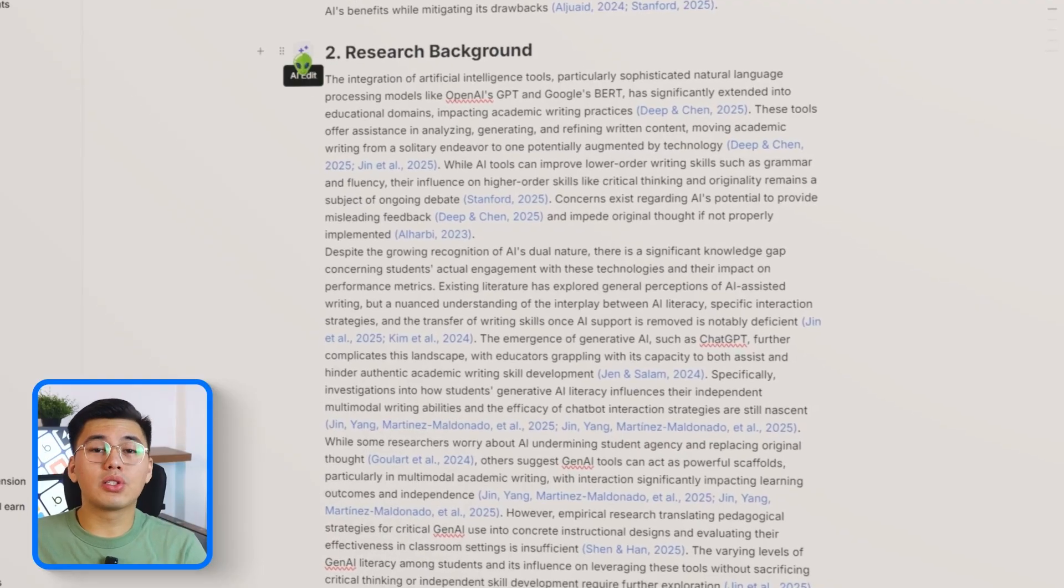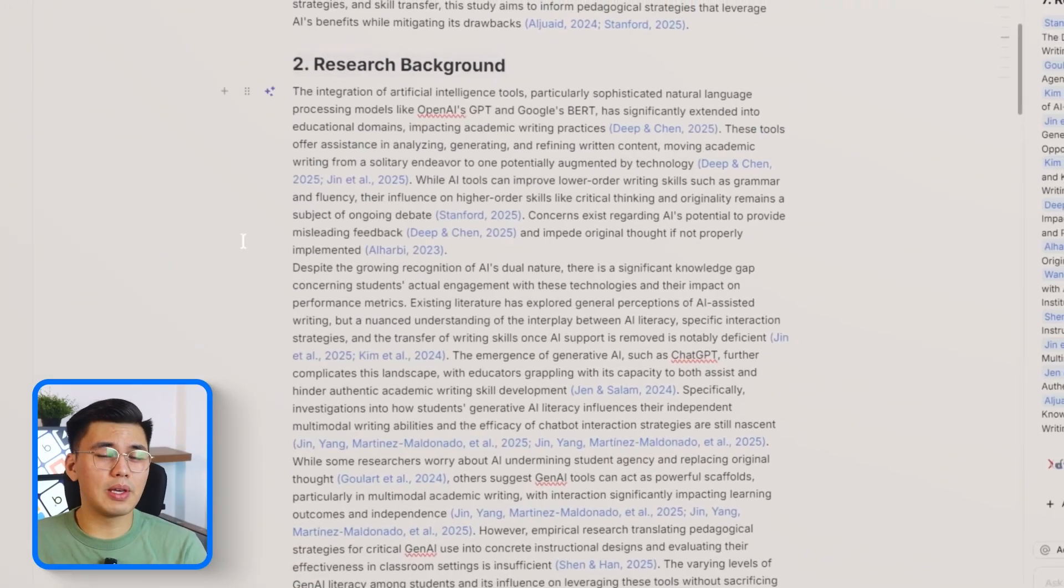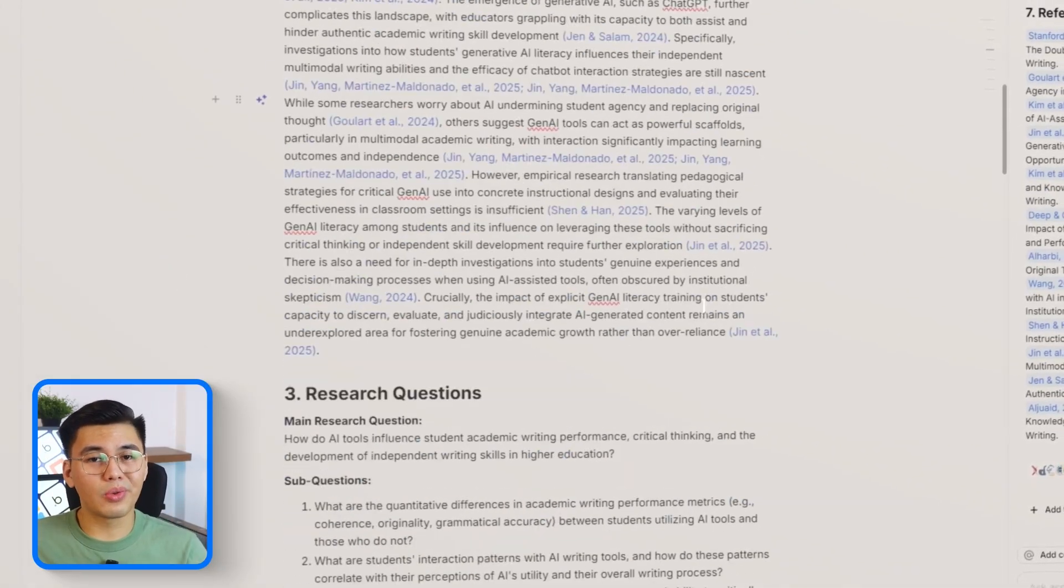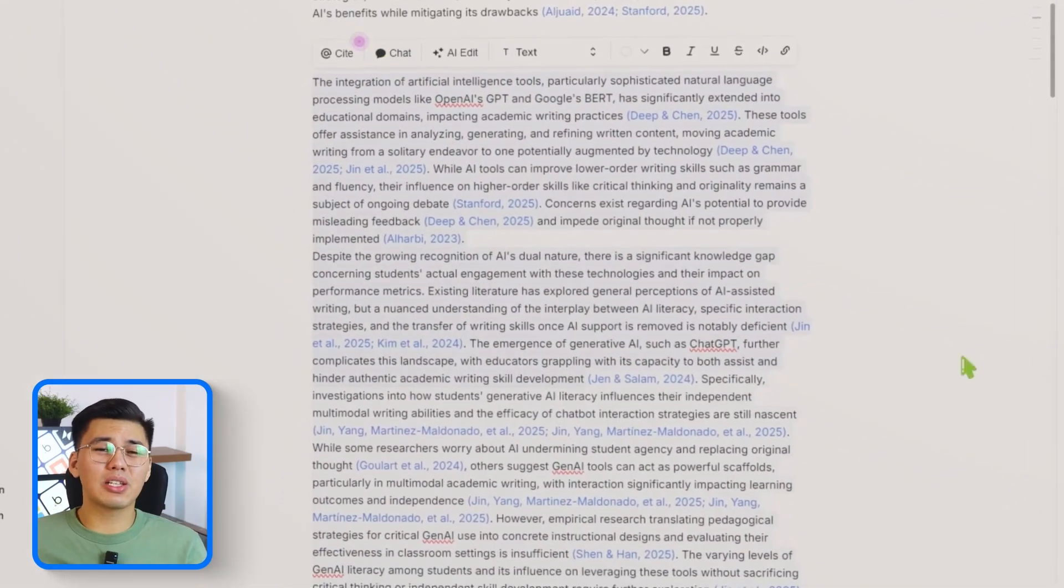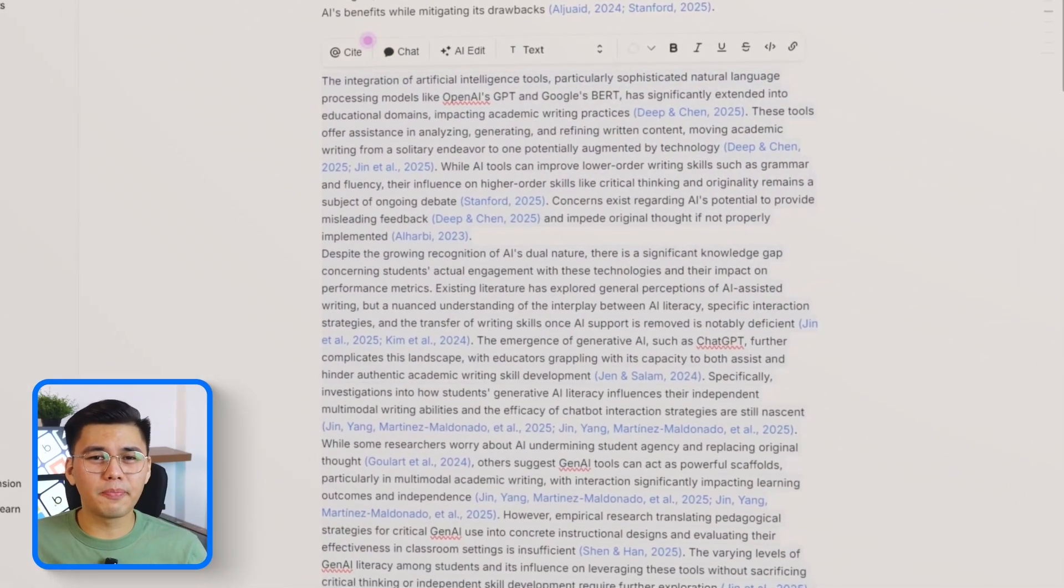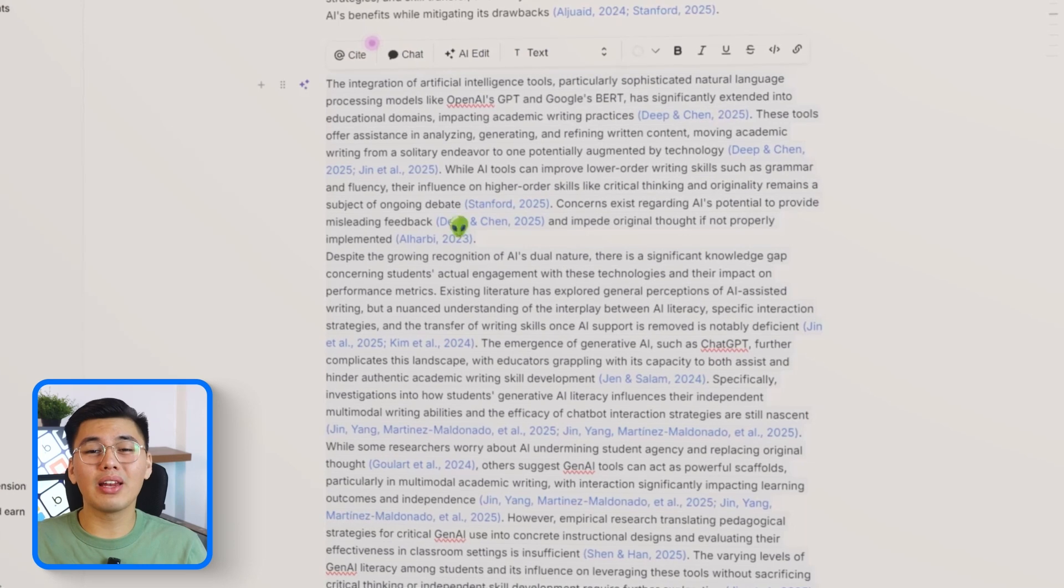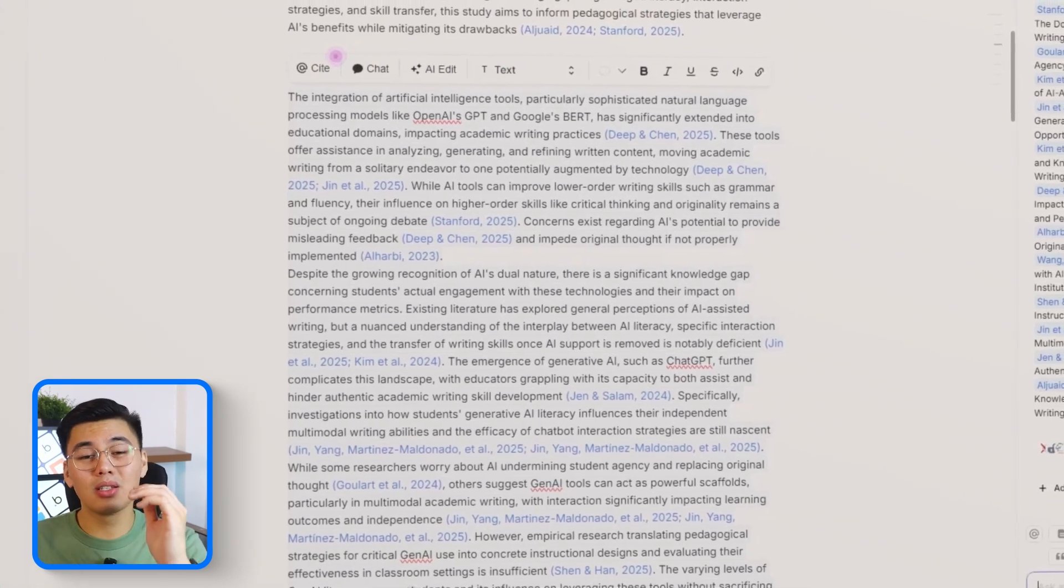After the abstract, we're going to move into the research background section - the part that usually takes the longest to write because it depends so much on context, literature, and finding the right angle.